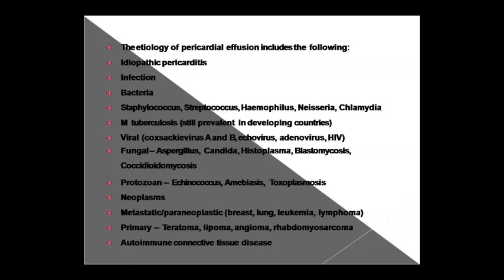Viral infections causing pericardial effusion include Coxsackievirus B1 and B2, Echovirus, and Adenovirus. HIV infection can also lead to pericardial effusion. Fungal infections such as Aspergillus, Candida, Histoplasma, Blastomycosis, and Coccidioidomycosis can also be causative agents.